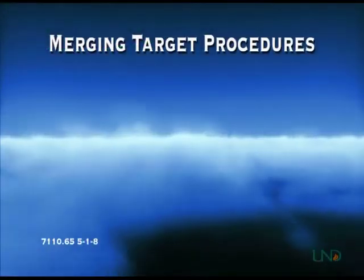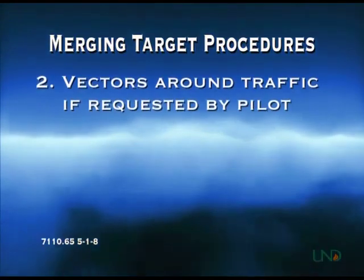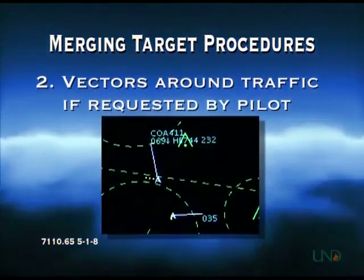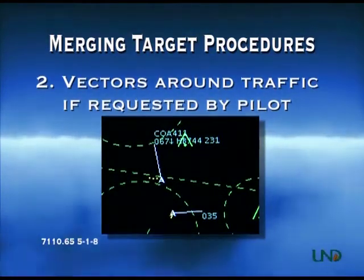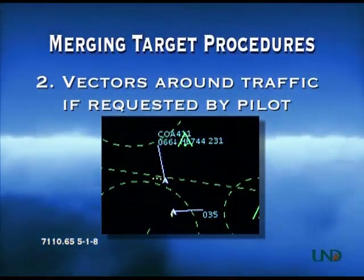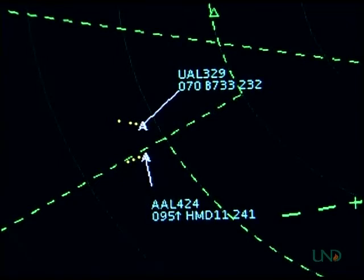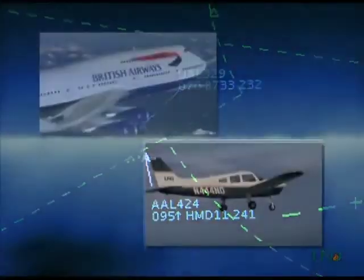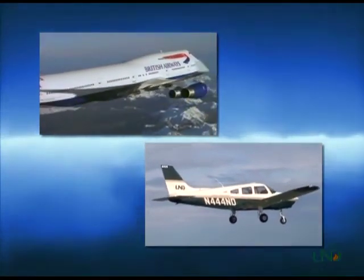The second element of merging target procedures is to provide vectors around traffic if requested by the pilot. Note that it is up to the pilot to ask for the service, but you must issue the traffic call in a timely fashion so that the pilot has time to decide if a vector is necessary. If aircraft are separated by more than the vertical separation minimum, you can still issue traffic if you feel it is necessary. Remember that in a Piper Warrior, a Boeing 747 looks pretty big even if it is 2,000 feet above you.